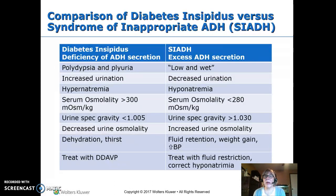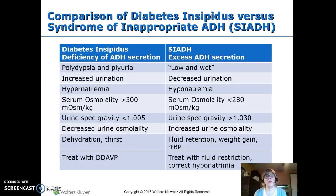Moving on to antidiuretic hormone issues: DI and SIADH. Diabetes insipidus occurs when you don't have enough antidiuretic hormone, so you diurese excessively — polyuria and polydipsia. Because you lose water more than electrolytes, you get hypernatremia and increased serum osmolality. The urine is almost all water, so it has a low specific gravity and low osmolality.